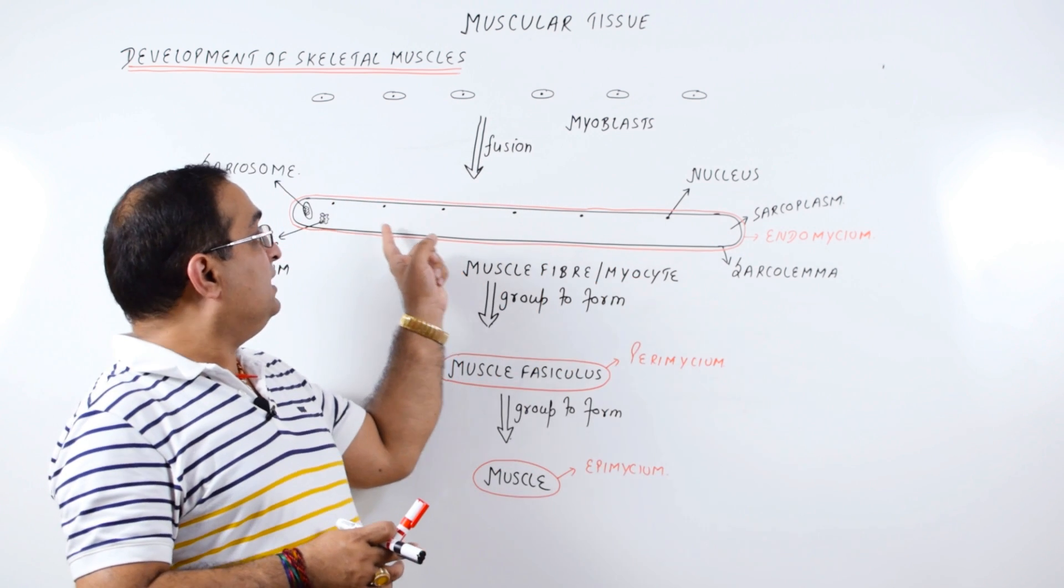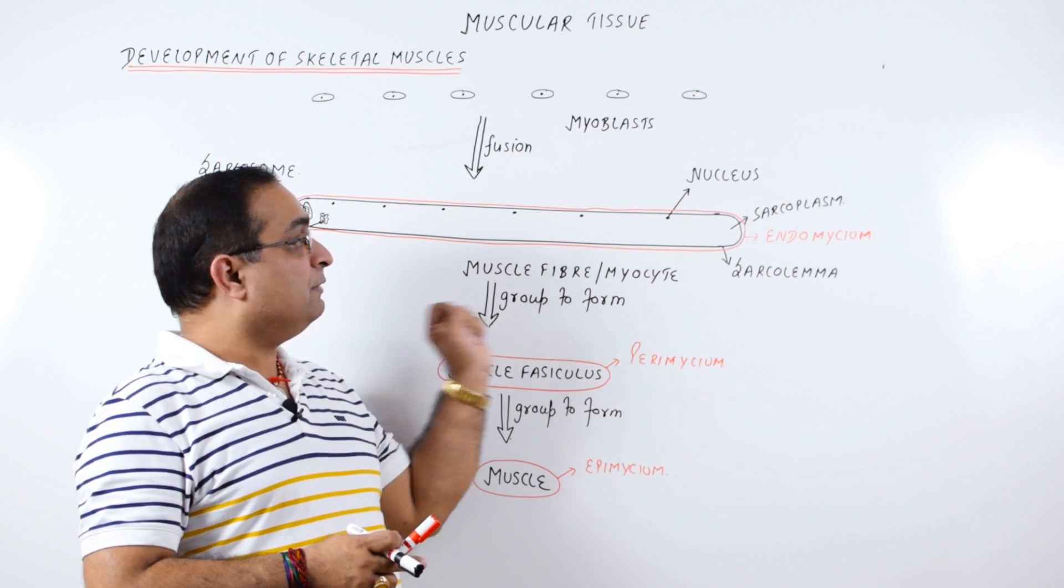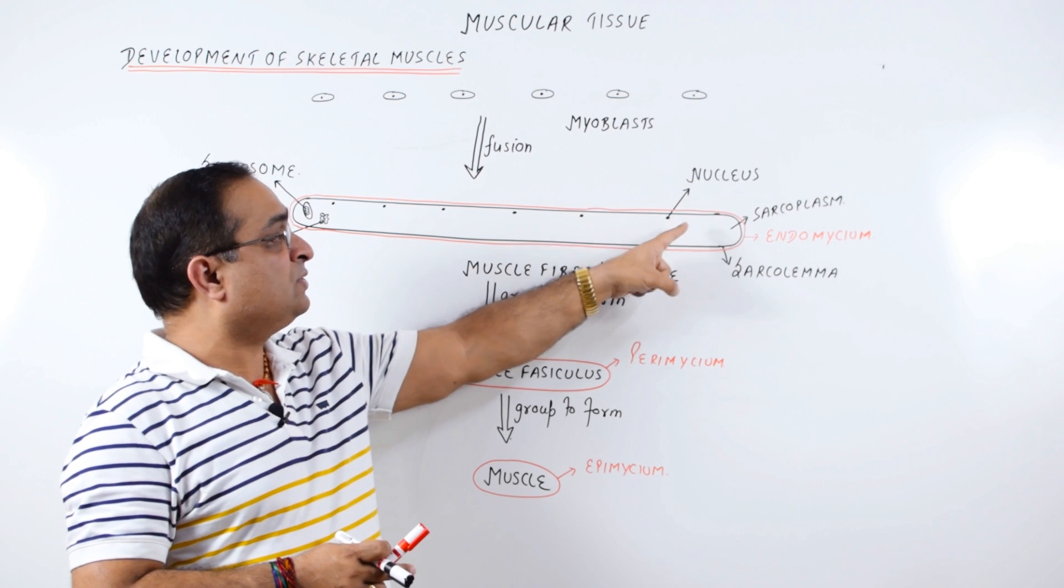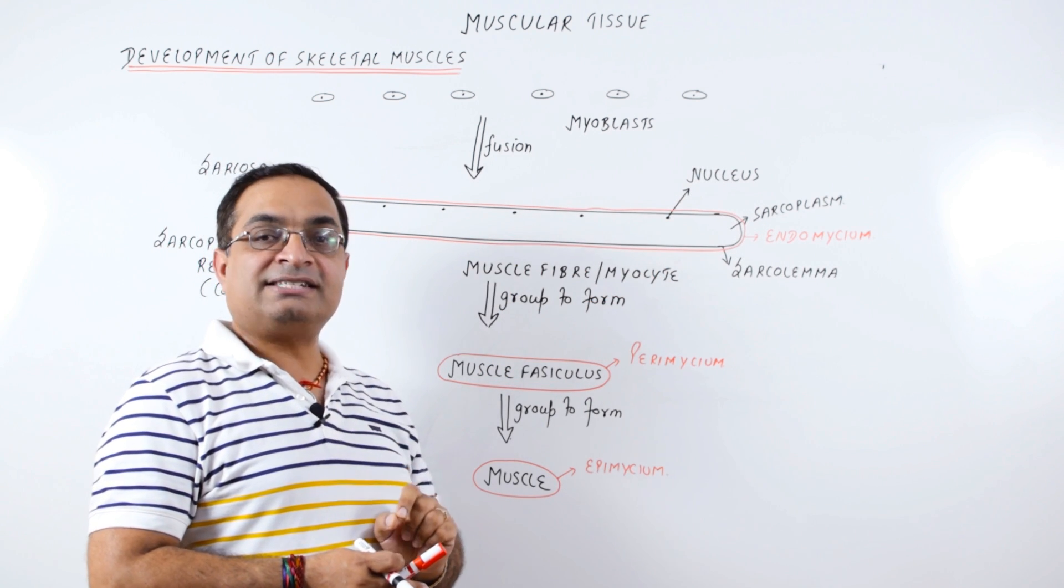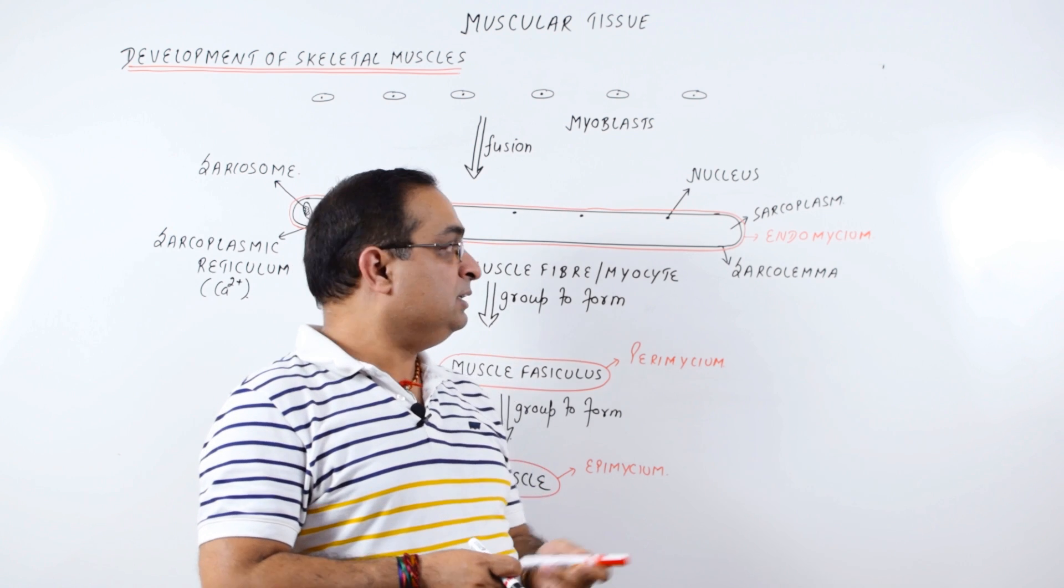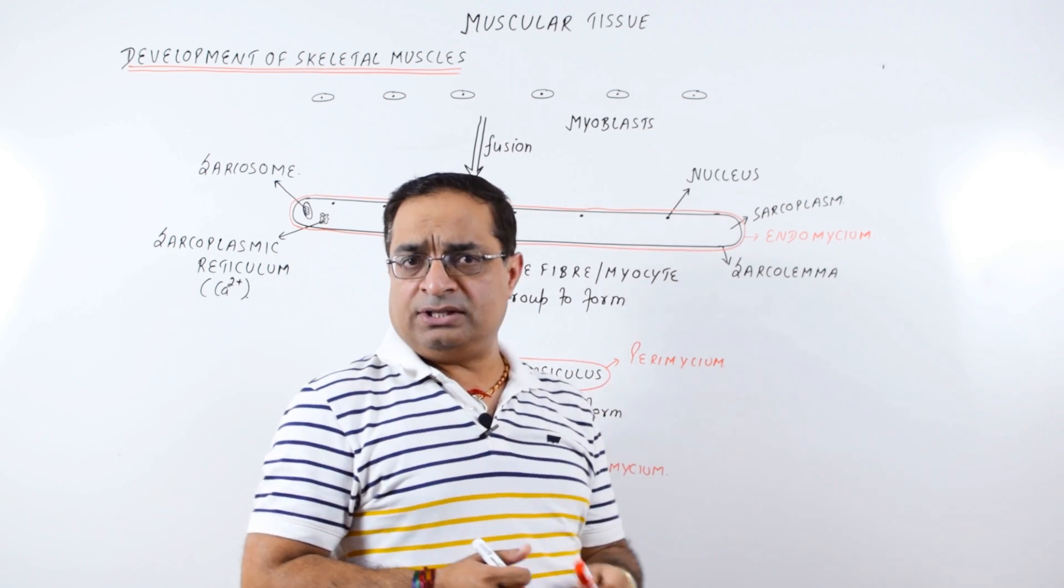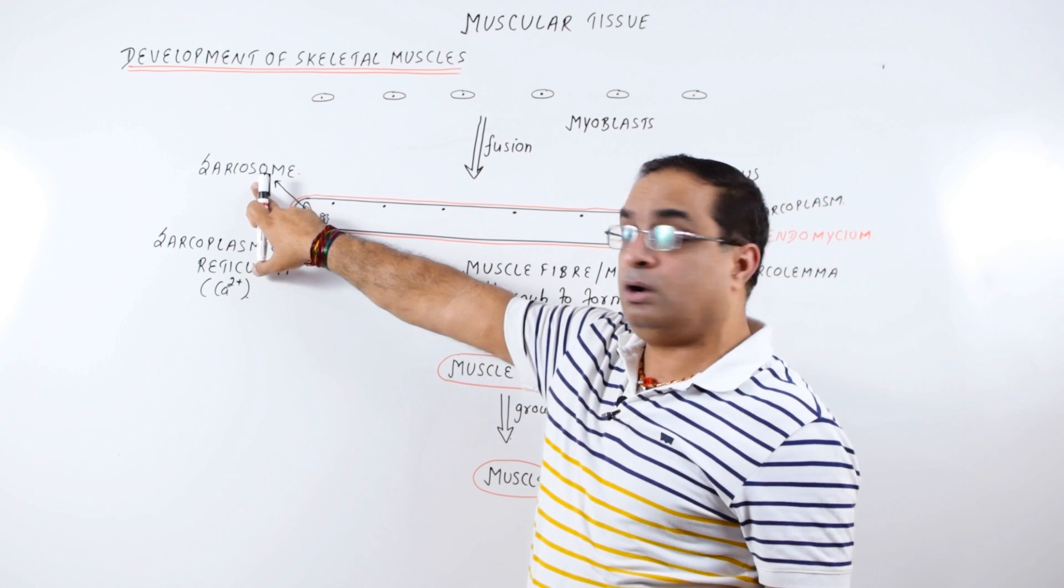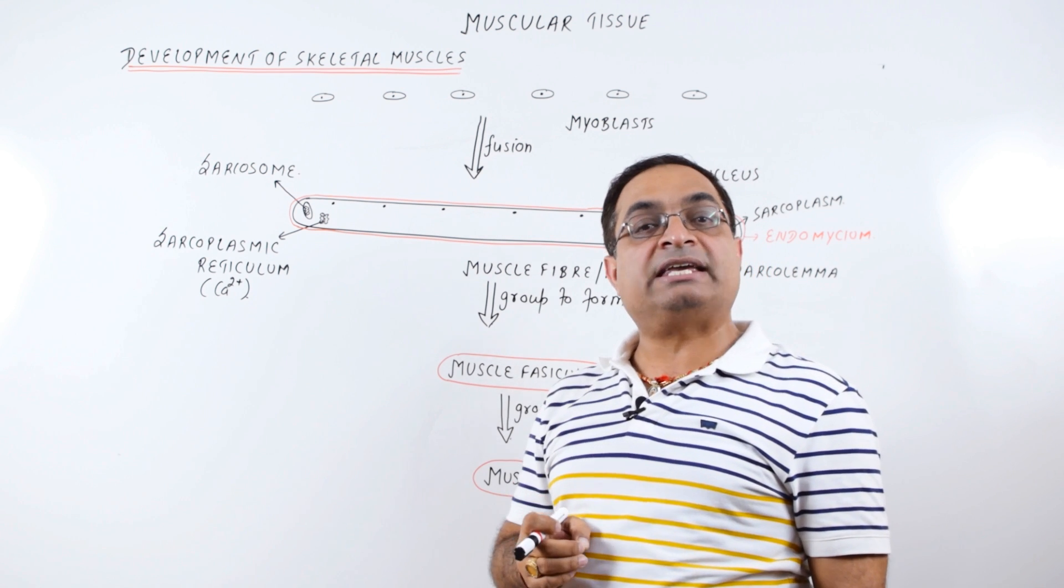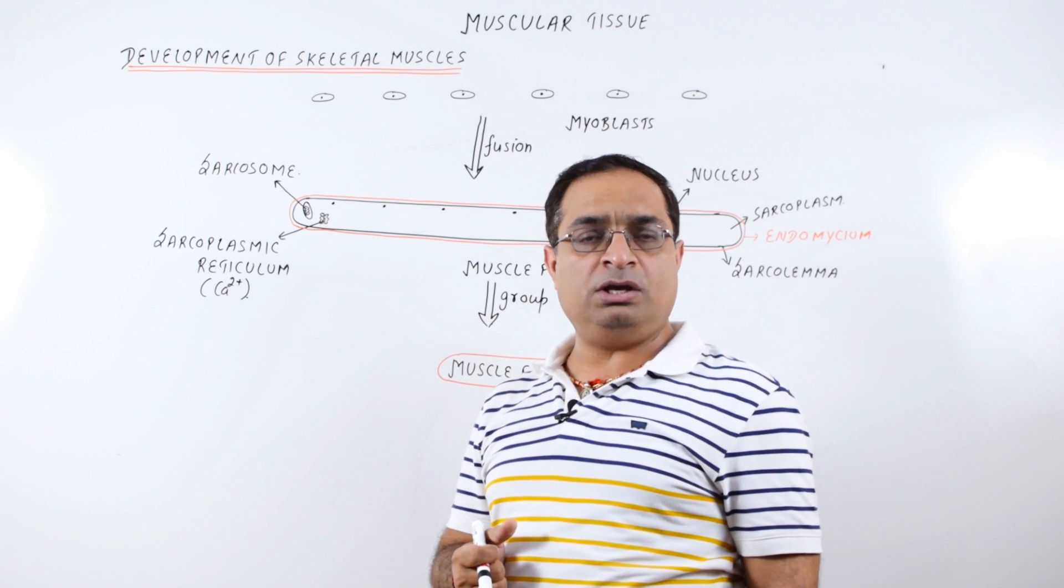In this diagram you can see that I have shown many nuclei in this elongated cylindrical structure. That means the skeletal muscle fibers are multinucleated or syncytium, because they are formed by fusion of many myoblasts. The nucleus is not located in the center, nuclei are peripherally located. The cytoplasm of the muscle fiber is called sarcoplasm. The plasma membrane is sarcolemma. The mitochondria which are the powerhouse are called sarcosomes. Endoplasmic reticulum is the sarcoplasmic reticulum and it stores calcium ions. Calcium ions play a very important role in muscle contraction which we will discuss in the sliding filament theory of muscle contraction.